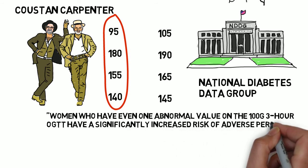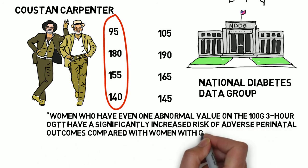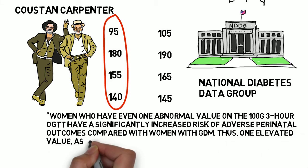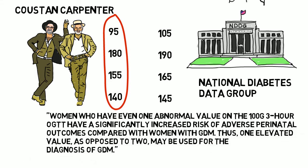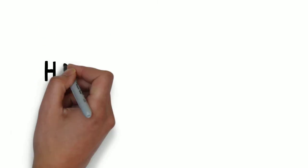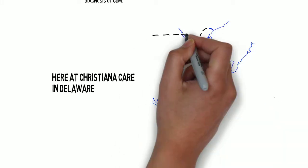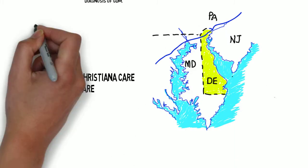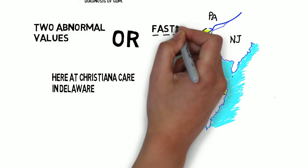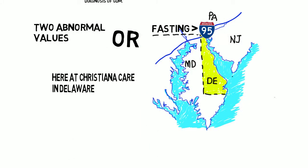But according to this practice bulletin, number 180, women who have even one abnormal value on the 100-gram, three-hour oral glucose tolerance test have a significantly increased risk of adverse perineal outcomes compared with women with gestational diabetes. Thus, one elevated, as opposed to two, may be used for the diagnosis of gestational diabetes. Here, we use two values, or one value if it's the fasting that's abnormal.